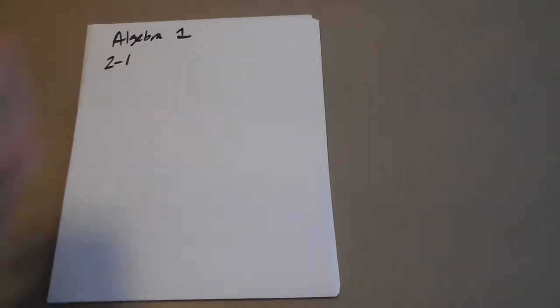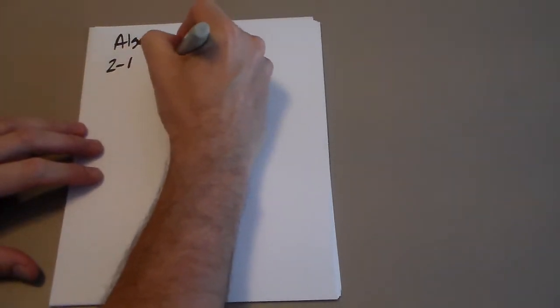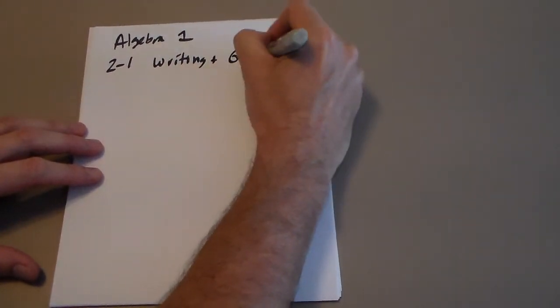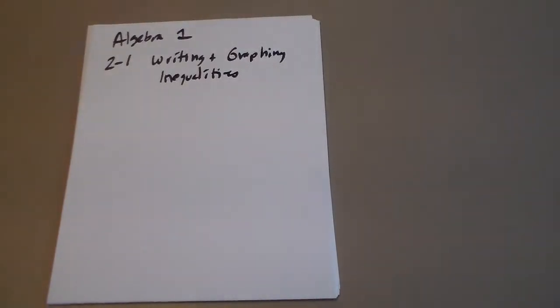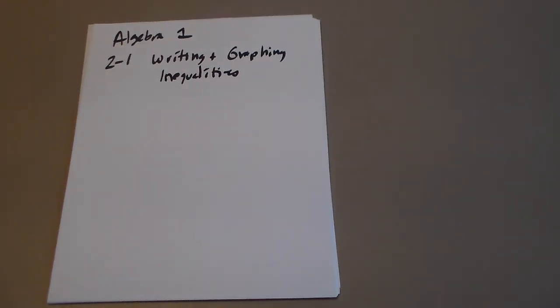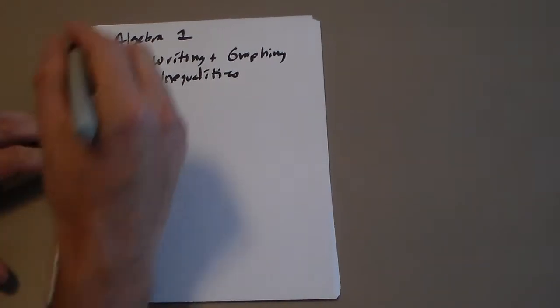Okay guys, this is Algebra One — we're going to work in chapter two, section two-one, called Writing and Graphing Inequalities. You should be taking notes; your sub will be checking to see that you have these notes, and that counts as your assignment. Make sure you copy and do the problems as I read them to you, and when we pause the video that you're doing them — that's how you're going to get something out of this.